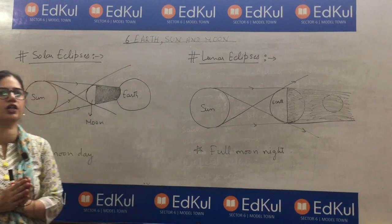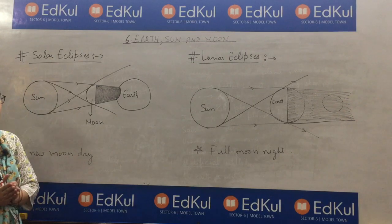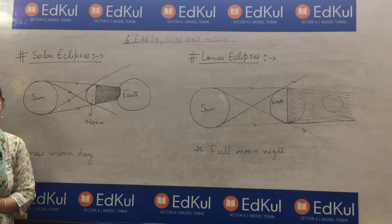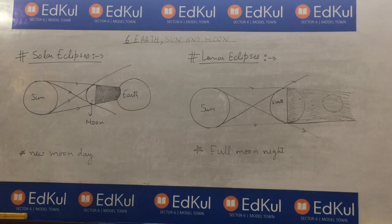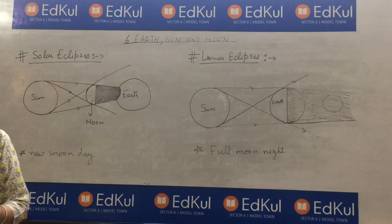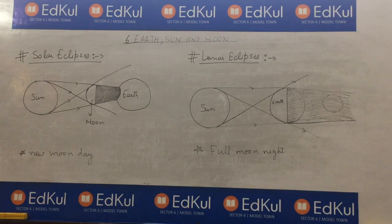They are blocking each other — so that is eclipse. Now we will discuss: there are two types of eclipse, we will discuss them one by one. One is solar eclipse and the other one is lunar eclipse.